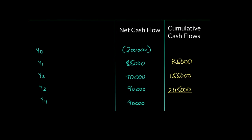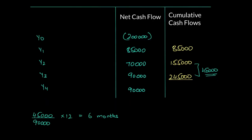After 155,000, how much did we still have to recover? Our objective was 200,000 and we'd recovered 155,000, so we had to recover 45,000 more (200,000 minus 155,000). We then calculate: we had to recover 45,000 out of the 90,000 cash flow received in year three.